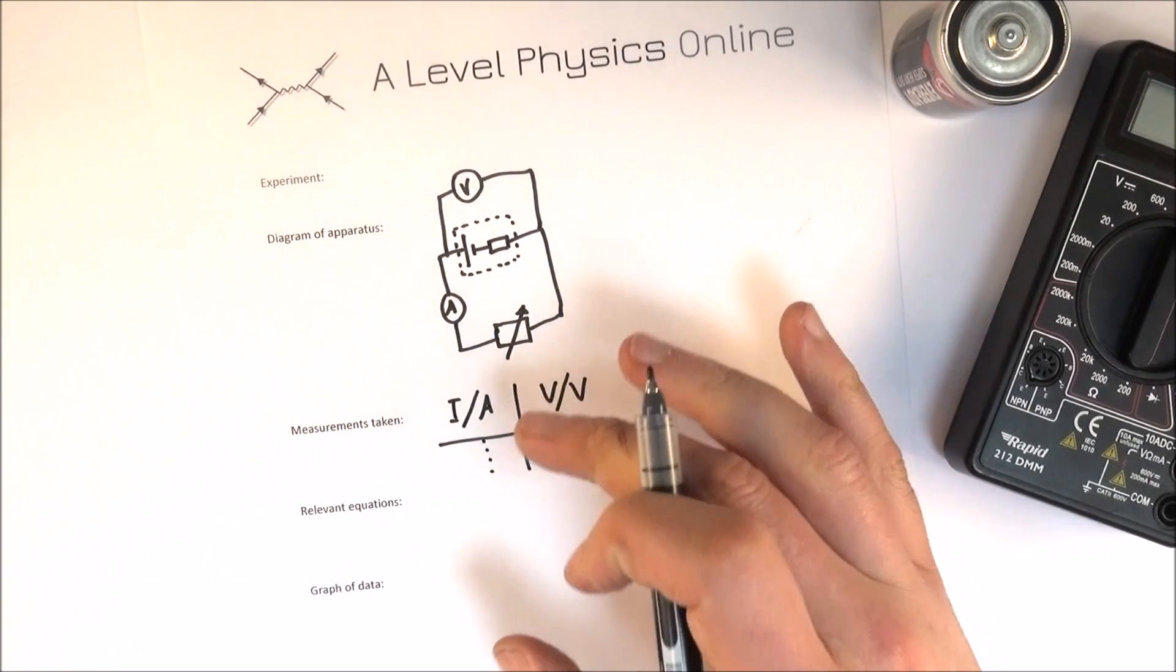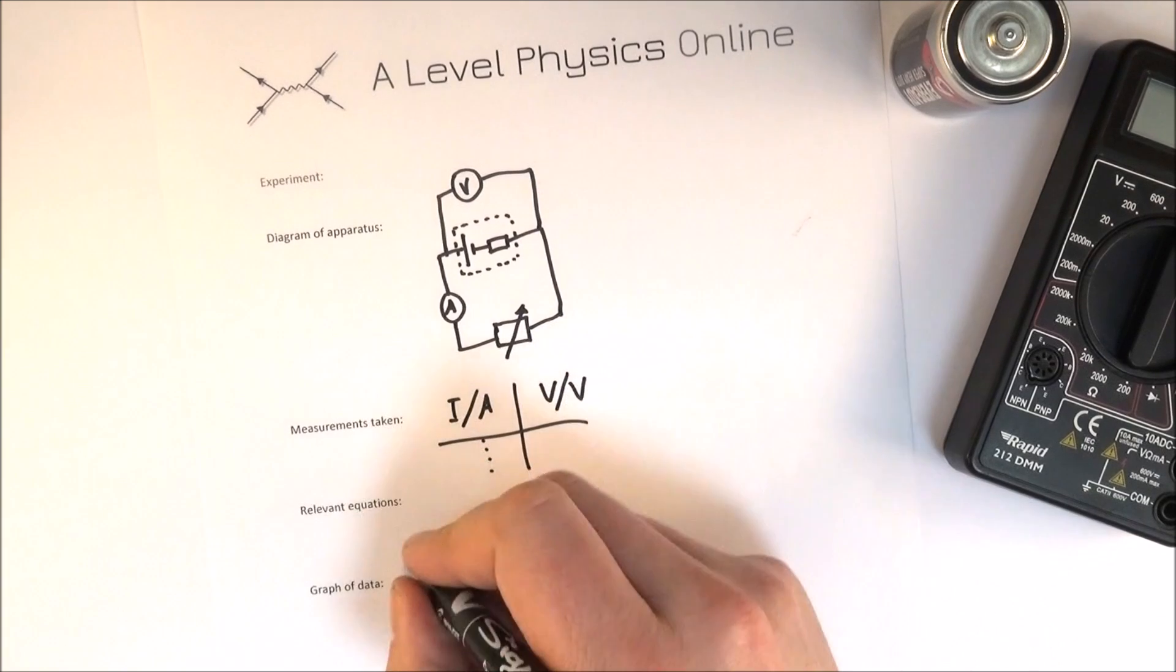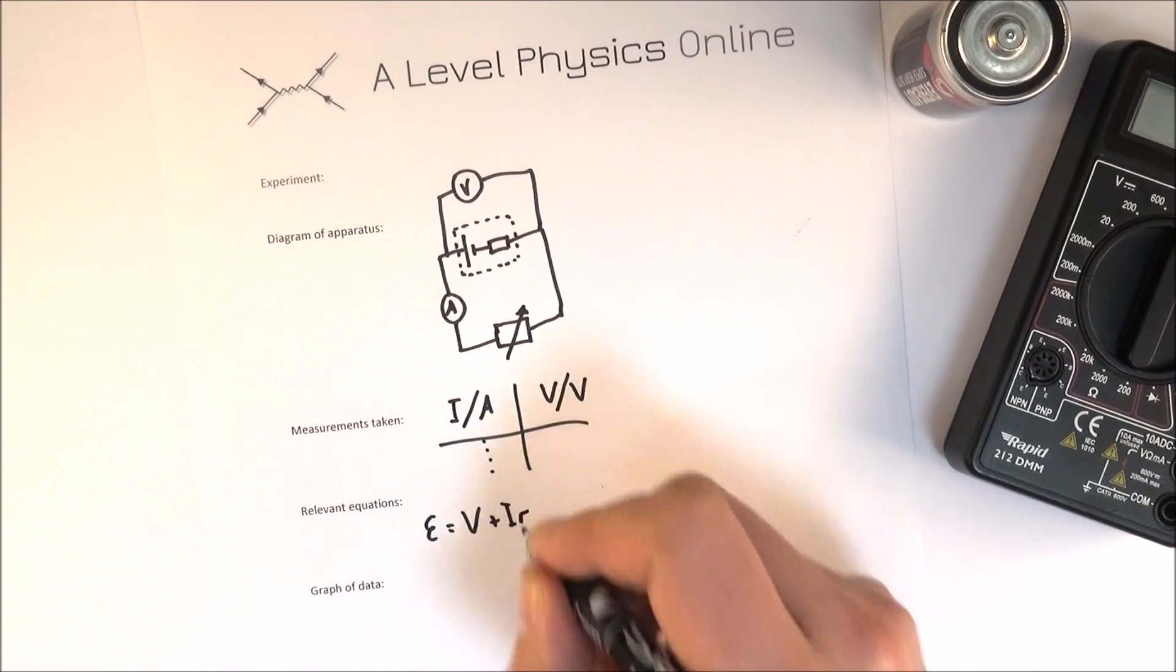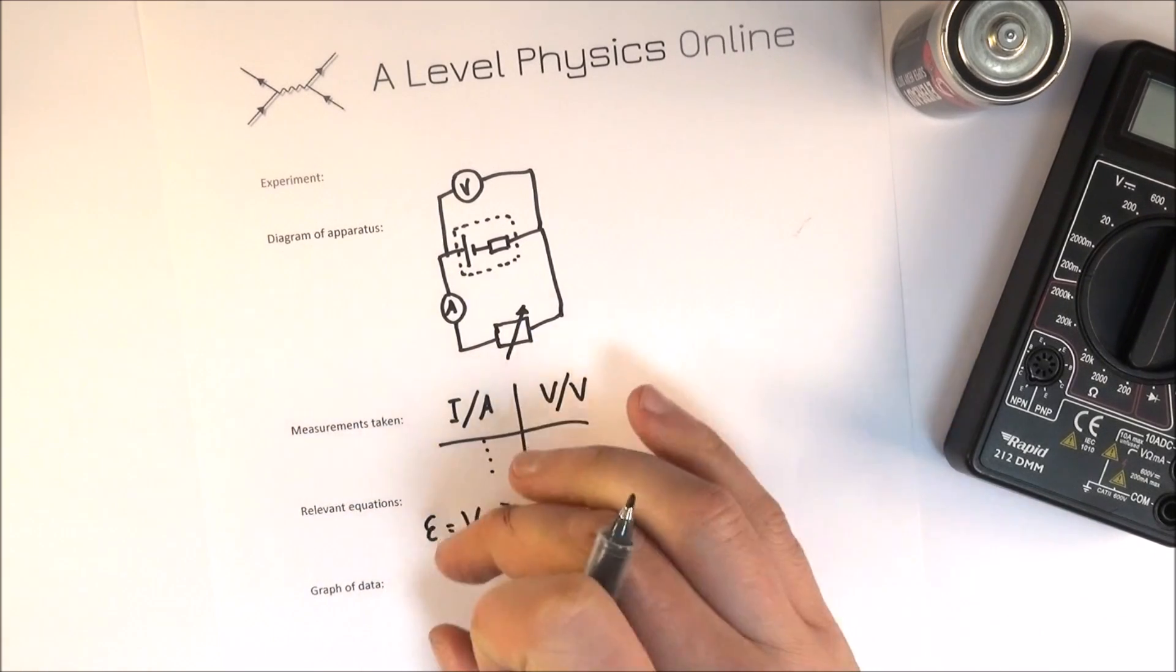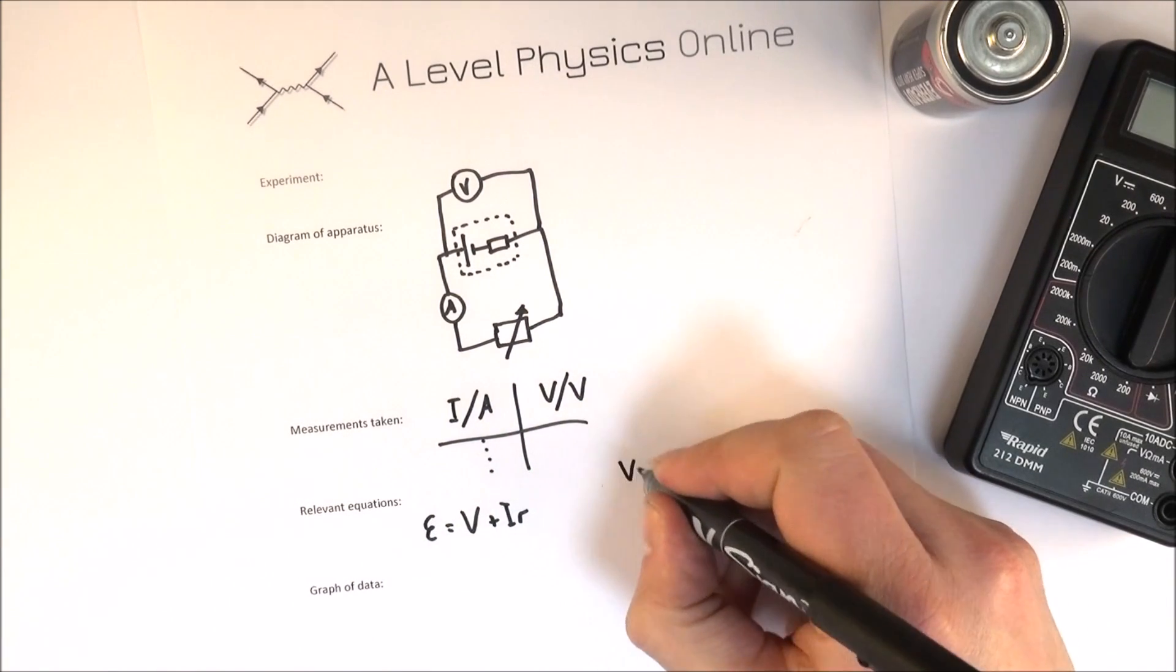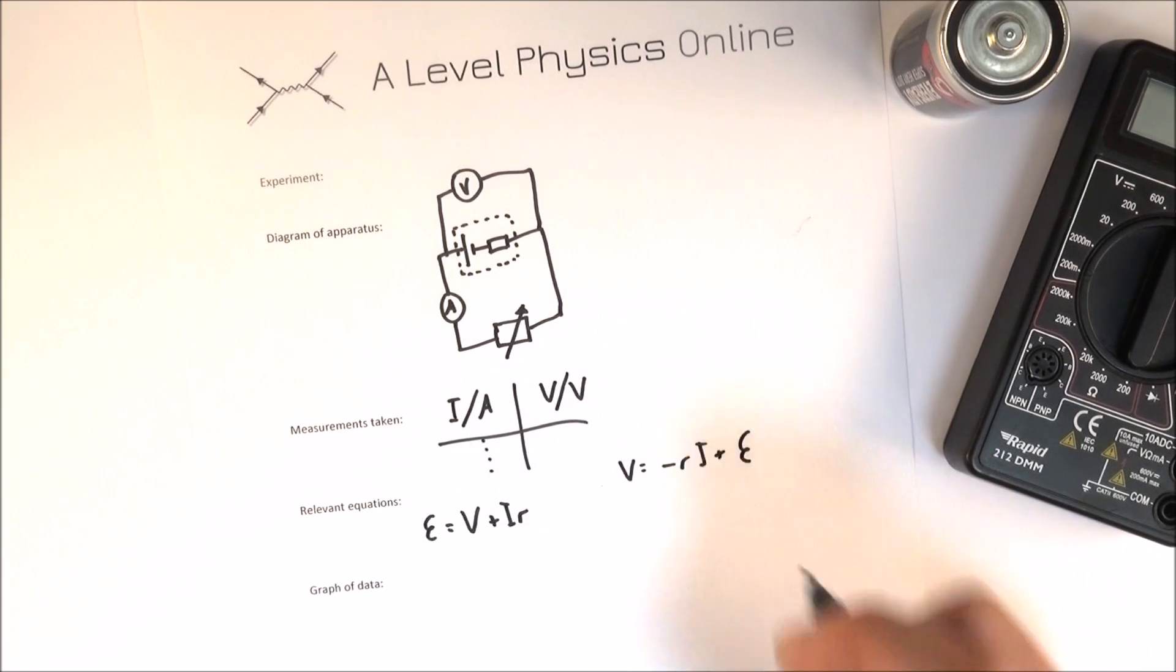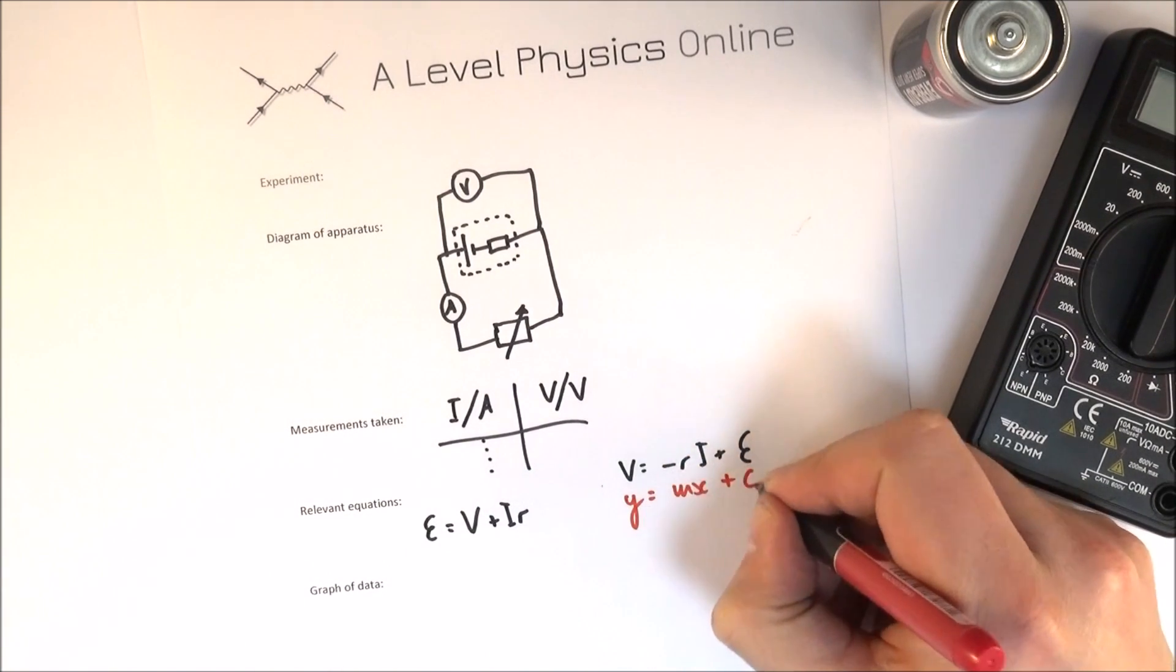You can then think about not only what measurements have you taken but maybe some relevant equations. In this case you've got the equation that says E is equal to V plus IR. So you know it doesn't really matter what experiment you're doing. Think about how the equations that you know fit into that. We can also think about how this is rearranged to maybe make V is equal to minus RI plus E and then how this may be linked to the equation that says Y is equal to MX plus C.